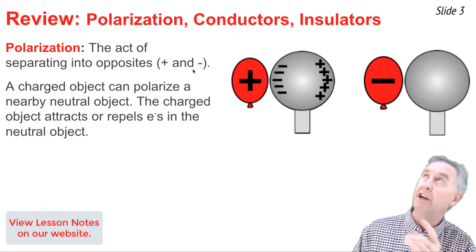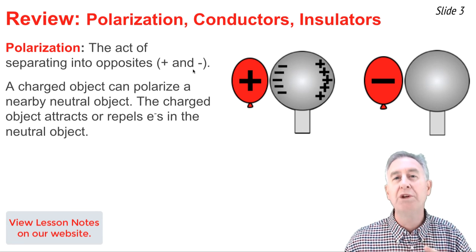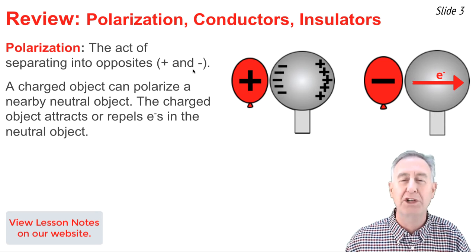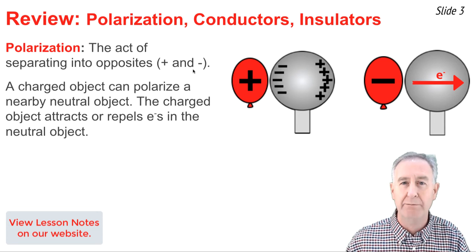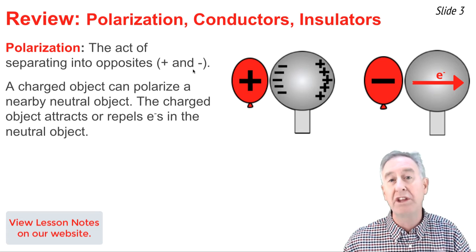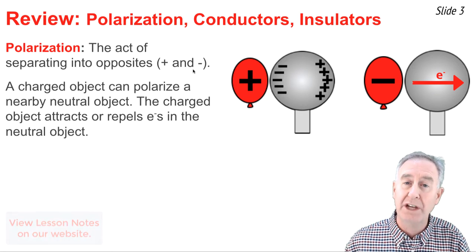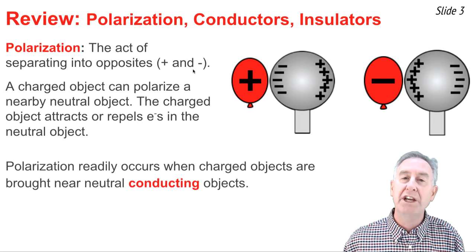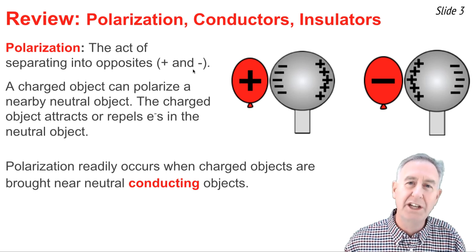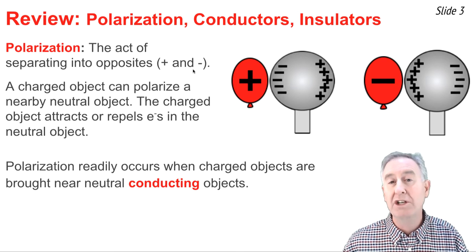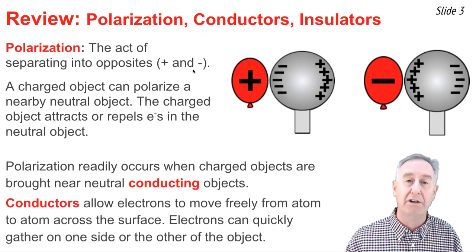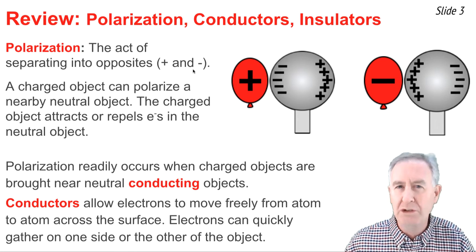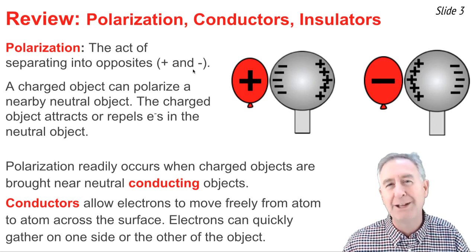In the case of a negative balloon brought near a neutral conducting sphere, electrons move in the opposite direction, repelled by the negative balloon. So electrons move within the neutral conducting sphere from the left side to the right side, causing polarization. Polarization occurs much more readily in conductors than in insulators, because conductors allow for the free flow of electrons across their surface, allowing them to gather on one side when induced by a nearby charged object.